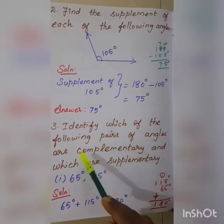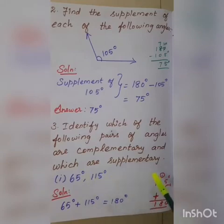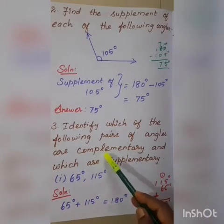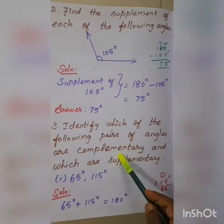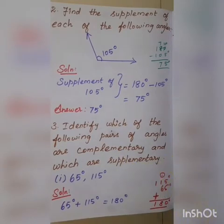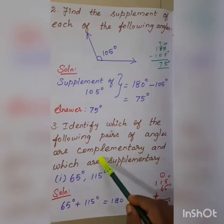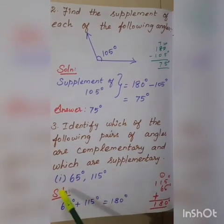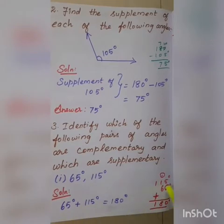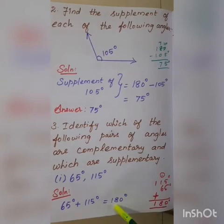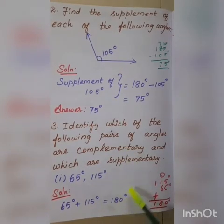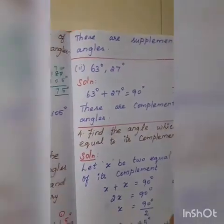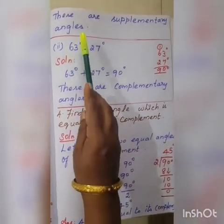Third one: identify which of the following pairs of angles are complementary and which are supplementary. Complementary means the sum of two angles is 90 degrees. Supplementary means the sum is 180 degrees. The first pair: 65 degrees and 115 degrees. We add: 115 plus 65 equals 180 degrees. So these are supplementary angles.